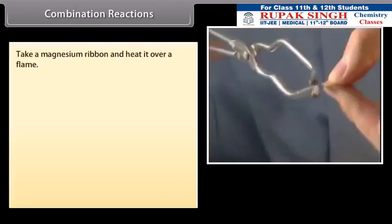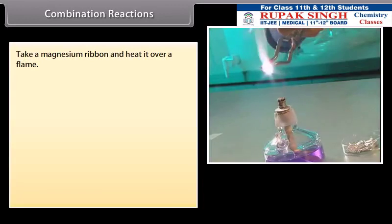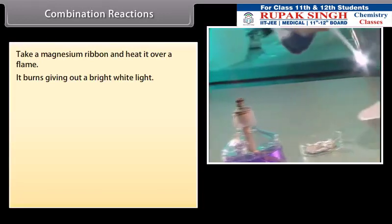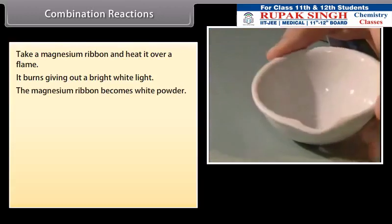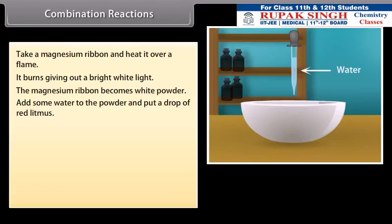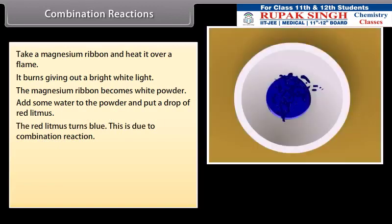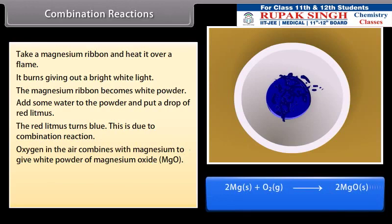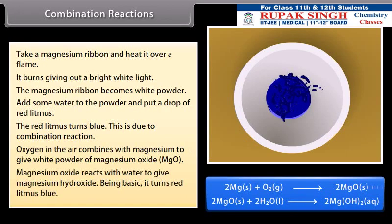Activity: Take a magnesium ribbon and heat it over a flame. It burns giving out a bright white light. The magnesium ribbon becomes white powder. Now add some water to the powder and put a drop of red litmus. The red litmus turns blue. This is due to combination reaction. Oxygen in the air combines with magnesium to give white powder of magnesium oxide. Magnesium oxide reacts with water to give magnesium hydroxide. Being basic, it turns red litmus blue.